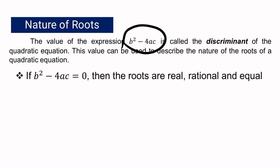For the first case, if b squared minus 4ac is equal to 0 — that is, if the discriminant is equal to 0 — then the roots are real, rational, and equal. You may be familiar with the expression b squared minus 4ac; it is actually the expression inside the radical sign in the quadratic formula.